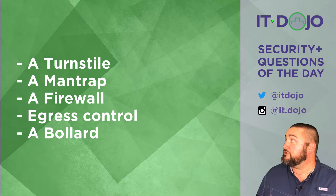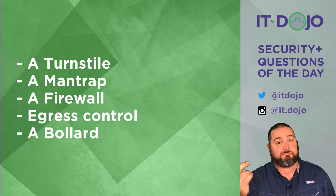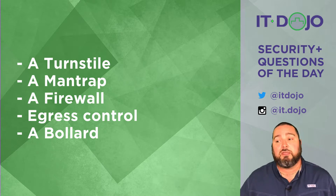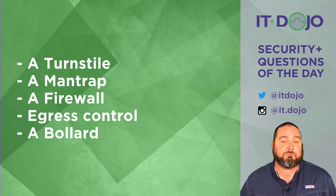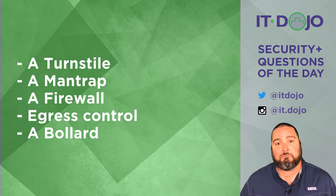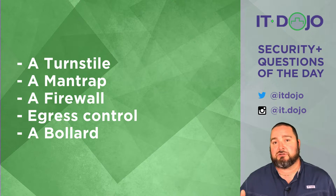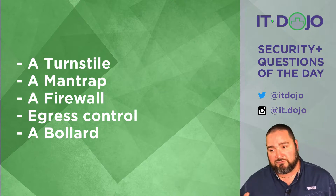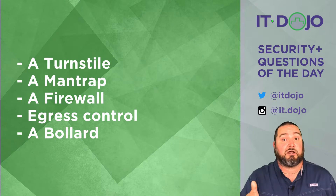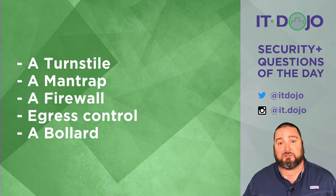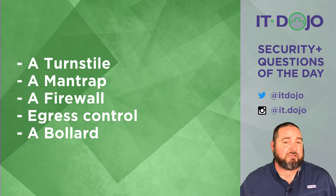A turnstile is one of those spinny jobbies that you have to go through — its specific intent is to limit the number of people that can pass through a particular area in a particular period of time. Think of access to the metro station, some buildings, or concert venues — you all have to go through a turnstile. It's a mechanism of ingress and egress control.